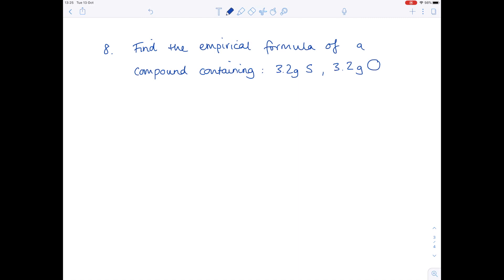Find the empirical formula of a compound containing 3.2 grams of sulfur and 3.2 grams of oxygen. Our masses are given in the question. Our MRs we find from the periodic table. Our number of moles are given by mass divided by MR. Identify the smallest number as being 0.1. Divide both sides by 0.1 to get a ratio of 1 to 2. Our final answer is SO2.